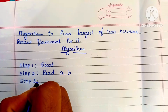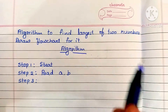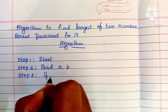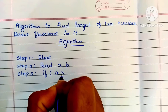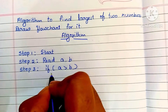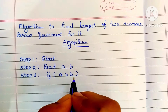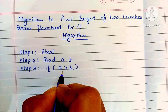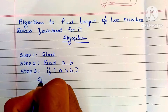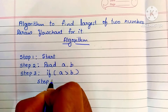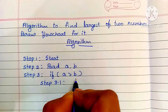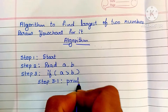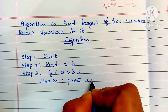Step 3: we have to find which number is largest. So we put the condition: if a is greater than b. If this condition is true, we print 'a is largest number' — step 3.1.